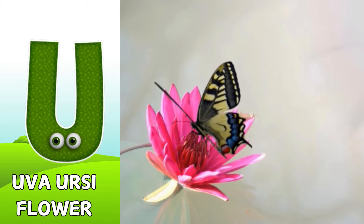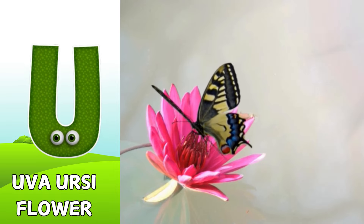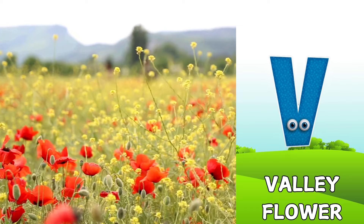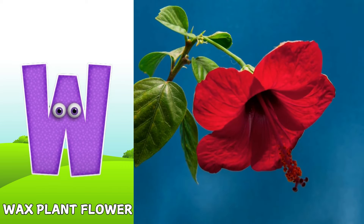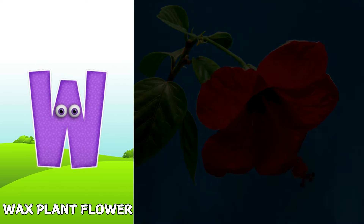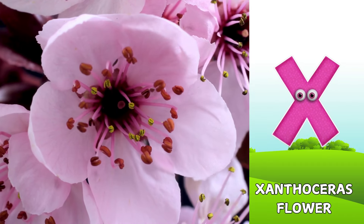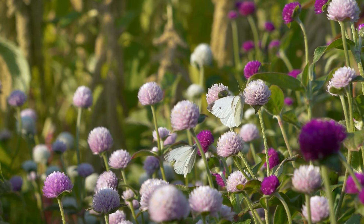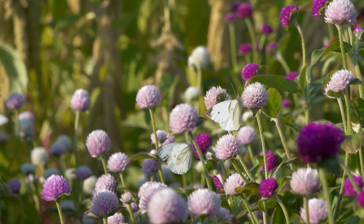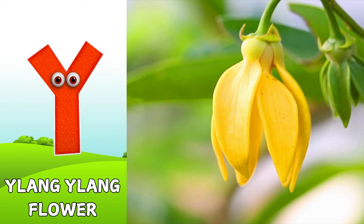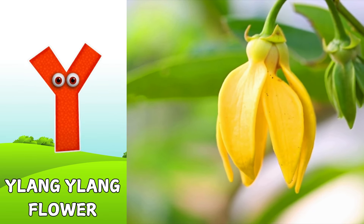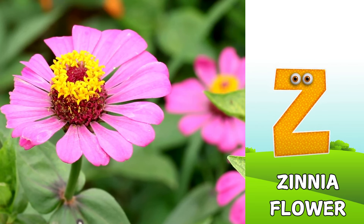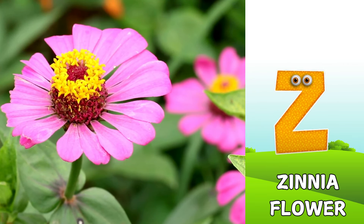U is for Uva Ursi flower. U, U, Uva Ursi flower. V is for Valley flower. V, V, Valley flower. W is for Wax Plant flower. W, W, Wax Plant flower. X is for Xanthoceras flower. X, X, Xanthoceras flower. Y is for Ylang Ylang flower. Y, Y, Ylang Ylang flower. Z is for Zinnia flower. Z, Z, Zinnia flower.